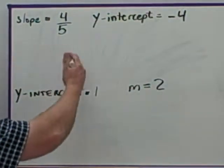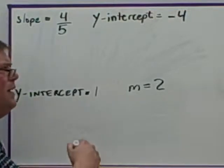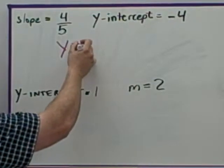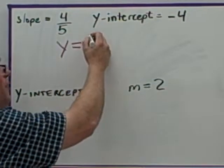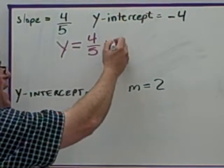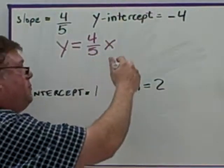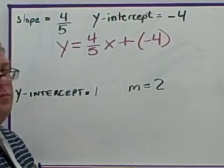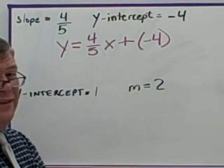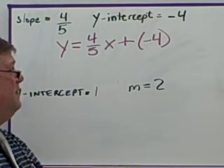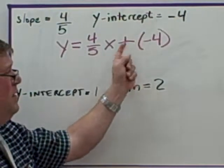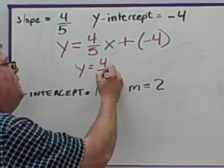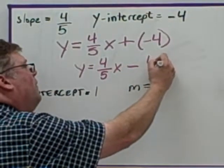Looking at this example, we have a slope of four-fifths and a y-intercept of negative four. So we are going to have y equals four-fifths x — because that is the mx part — plus a negative four. But rather than writing plus negative four with parentheses, we use the keep-it-change-it approach and write y equals four-fifths x minus four.